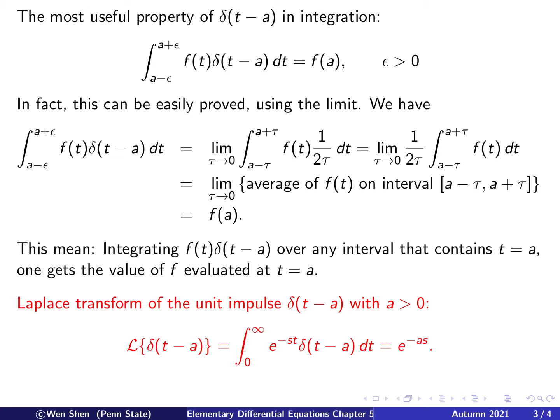Now let's compute the Laplace transform of the unit impulse function delta(t minus a) for a bigger than 0. By definition, the Laplace transform is the integral from 0 to infinity of e to the negative st times delta(t minus a) dt. This integral contains the point a, so using the sifting property we just discussed, this integral is exactly the function value at t equals a, giving us e to the negative as.